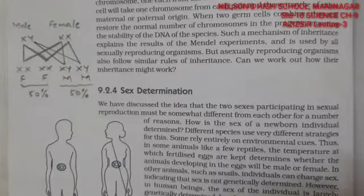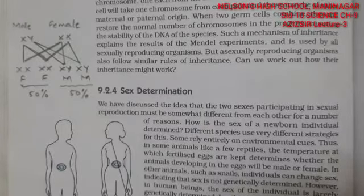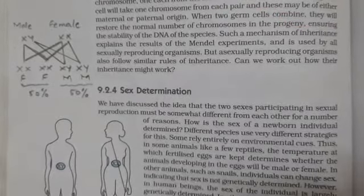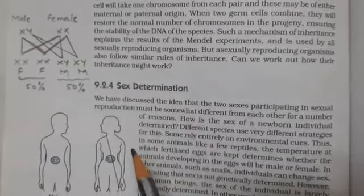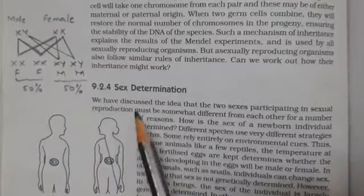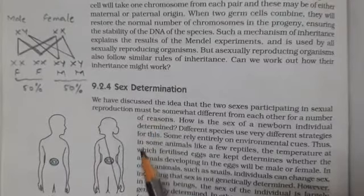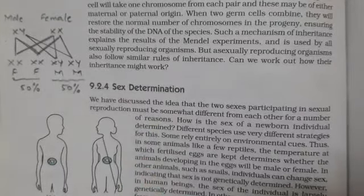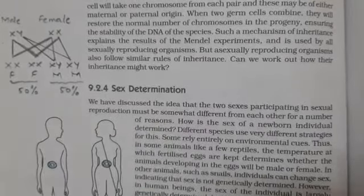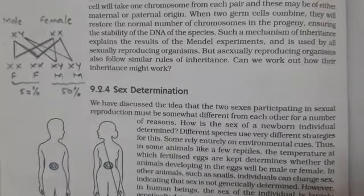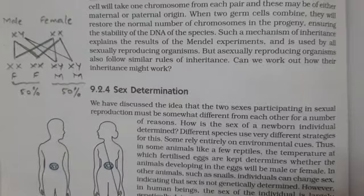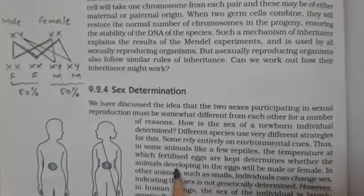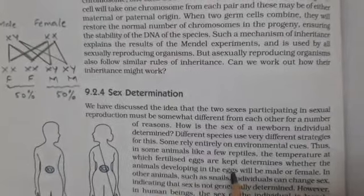Welcome friends. In science lecture 3, lesson 9, heredity and evolution, today's topic we are going to learn about sex determination. What is sex determination? It is an outcome from male and female gametes. What is the probability of a newborn child? A female donates an egg, that is an ovum.